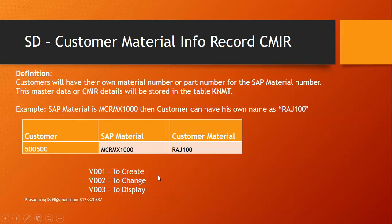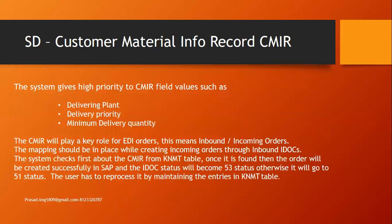The transaction codes we use here are VD01 to create, VD02 to change, and VD03 to display. This customer material info record has very good functionalities: the system gives high priority in determining the delivering plant, delivery priority, and minimum delivery quantity from the customer material information record.